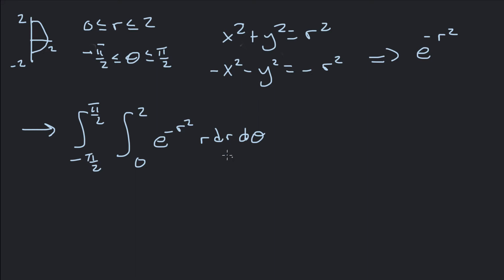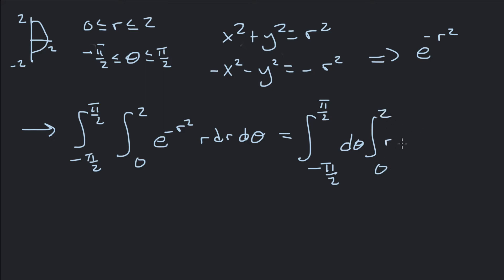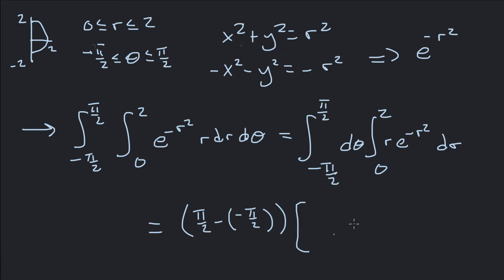Since there's no theta in the bounds of r or in the integrand, we can separate the integrals. This gives us the integral from negative pi over 2 to pi over 2 d theta, times the integral from 0 to 2 of r e to the negative r squared dr. The theta integral is straightforward: pi over 2 minus negative pi over 2 gives pi. For the remaining integral, we use u-substitution with u equals negative r squared, so du equals negative 2r dr.